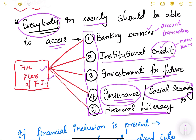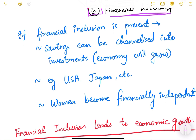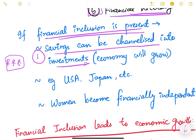This is a very important concept — if you understand this you will understand financial inclusion very properly. If financial inclusion is present in an economy, the first thing that happens is that savings can be channelized into investments properly. For example, if there are people in a village who have excess money — after their income minus their consumption — that remainder is their savings.